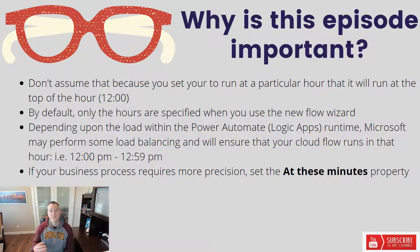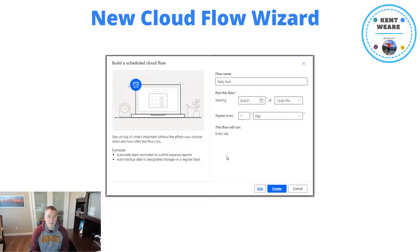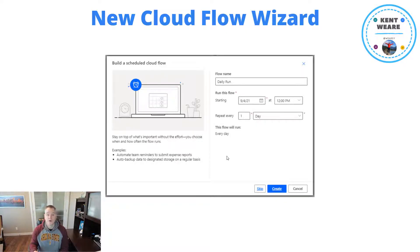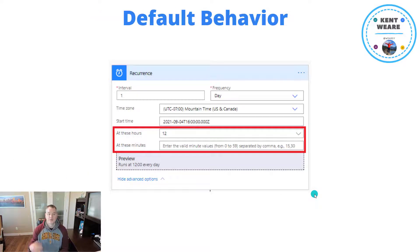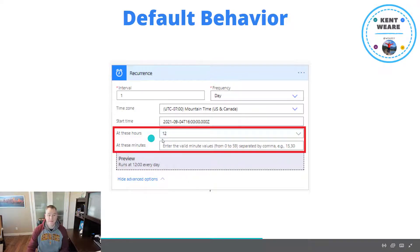The problem is it's not overly visible — you have to know that it exists in order to set it. So this is the wizard; I'm sure you've all seen this. If you go into the Power Automate Maker portal, go to the My Flows section, click on New Cloud Flow, it's going to ask if you want this to be scheduled. For example, I want a daily run at 12 p.m. repeating every day. You'll notice it says 'starting at 12 p.m.,' but it doesn't always guarantee it runs at exactly that time. The default behavior, when you provision that flow, will automatically populate 'at these hours of 12.'